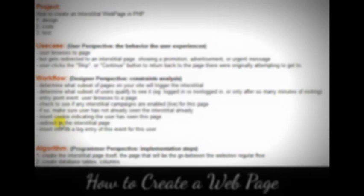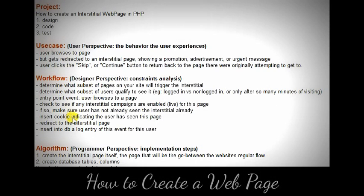We need to check if the user is a candidate for viewing the interstitial — whether they are in the subset of people who should see it, and whether they have not seen it before, if that is the business rule. If they have not seen it, we will insert a cookie indicating they have seen the page and then do the redirect to that page. For analysis purposes, we will also insert a log entry into the database for this event, since we definitely want to track the statistics of this feature.